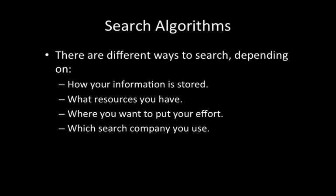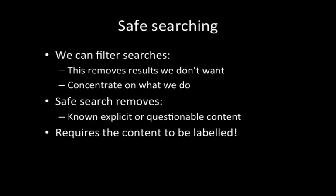The final thing that's going to have a big influence on which search algorithm you use is going to be which of the search companies you actually decide to use, because they've all got variations on these fundamental search algorithms. Filtering searches allows us to concentrate on the things that we're actually interested in. So rather than searching for ball, you can search for cricket ball, or you can search for pictures of a cricket ball. It allows us to concentrate on what we want.